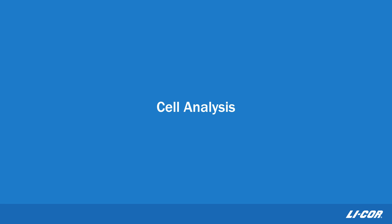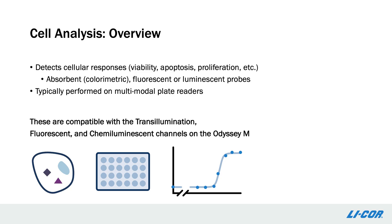Another family of experiments we can do using the expanded detection options on Odyssey-M is cell analysis. In addition to providing substantial improvements to western blot and in-cell western assays, the wide range of channels available on Odyssey-M opens the door to numerous other types of assays, including cell analysis. These assays use various detection systems, from simple dyes to more complex analyte recognition systems, to assess cell health such as viability, apoptosis, and proliferation, among others. These assays are typically performed in 96-well plates and analyzed on a plate reader, and many of them can now be detected on Odyssey-M.